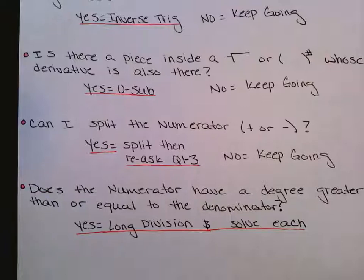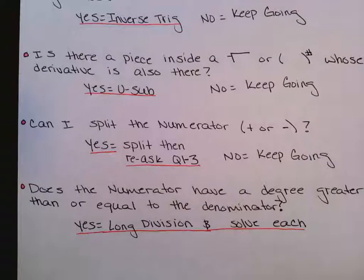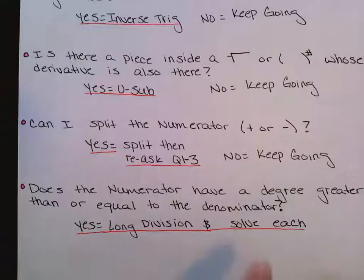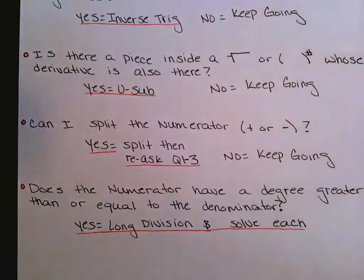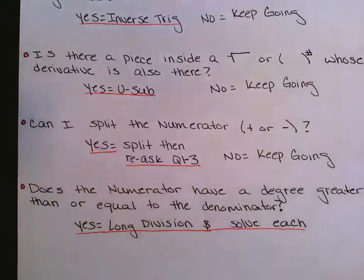And the last one, which we're going to go over in the next video, says: does the numerator have a degree greater than or equal to that of the denominator? If so, then it's going to be long division. And then once you do that division, you'll come out with multiple terms you can integrate each of them individually using one of these rules as well.